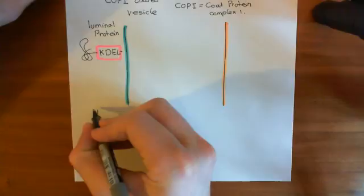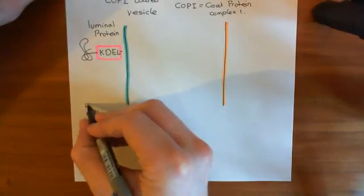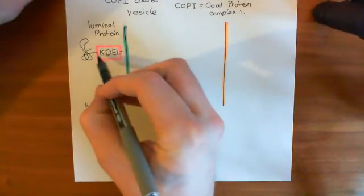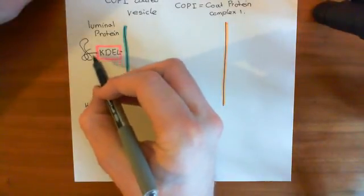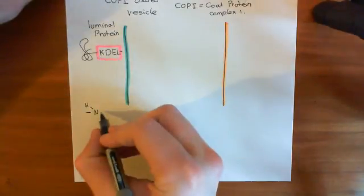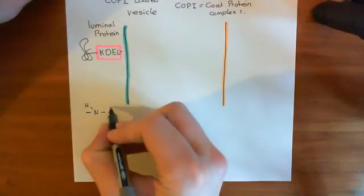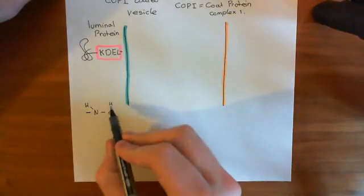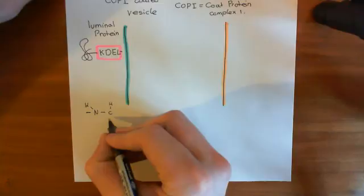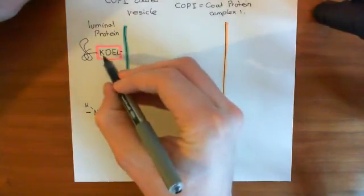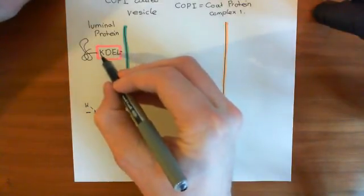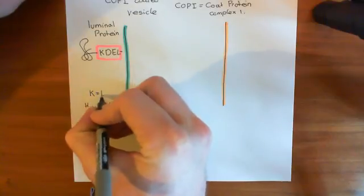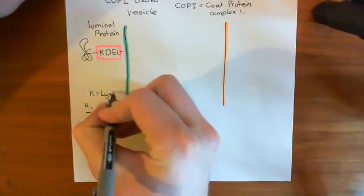Here's the amino terminus of K, which is bound to the carboxyl terminus of the amino acid in front of it. Then you have the alpha carbon, which has a hydrogen off it and then its R group. So what's the R group for lysine? K stands for lysine — that's what that single letter represents.